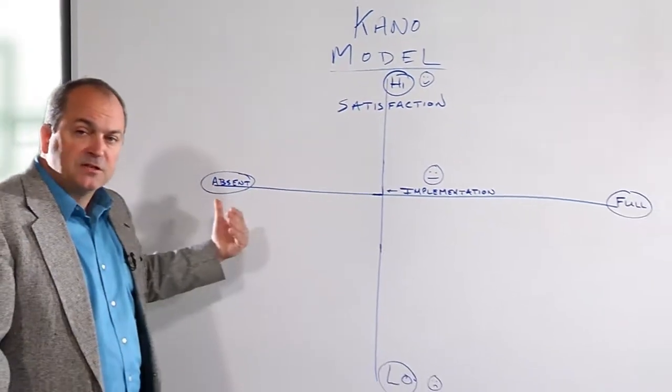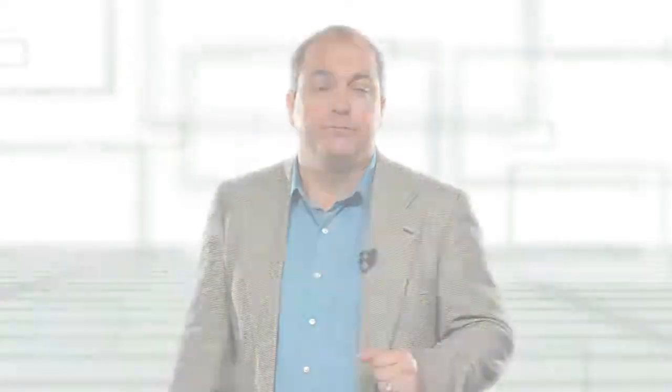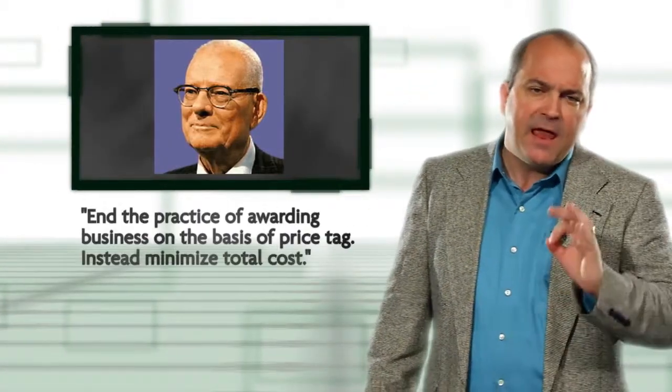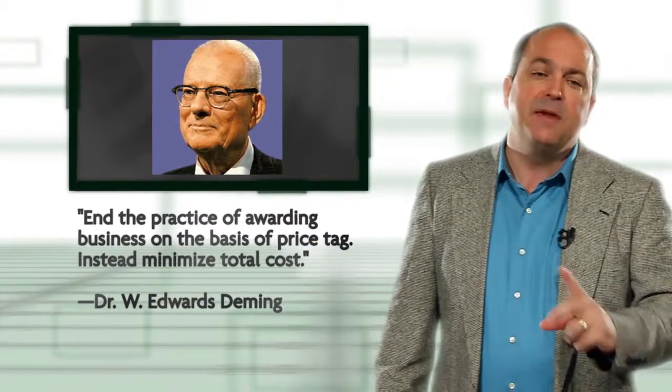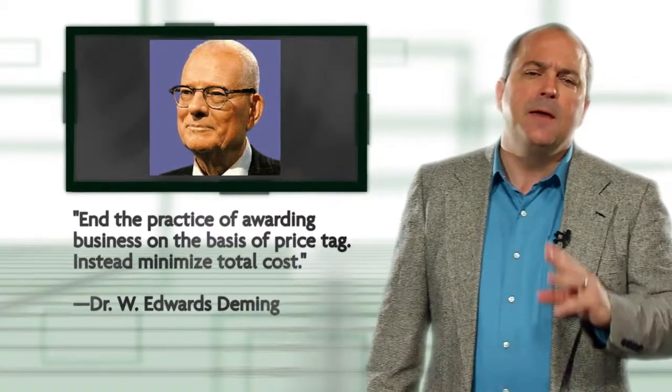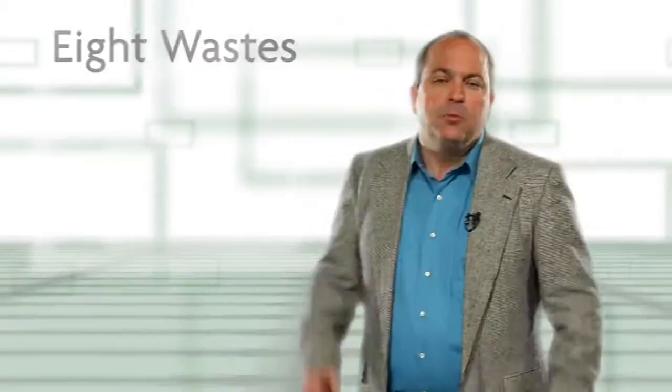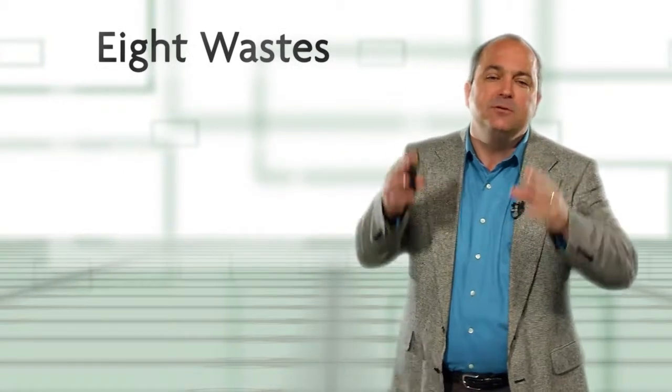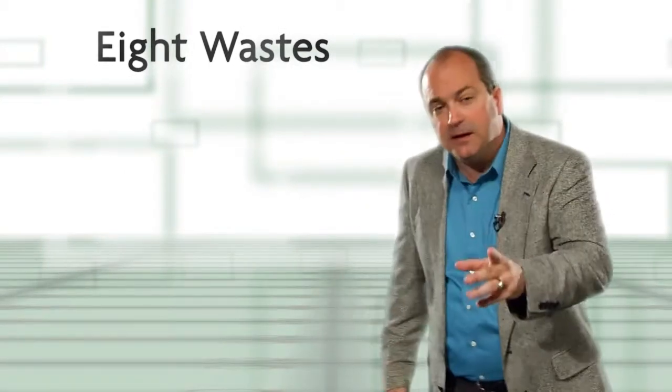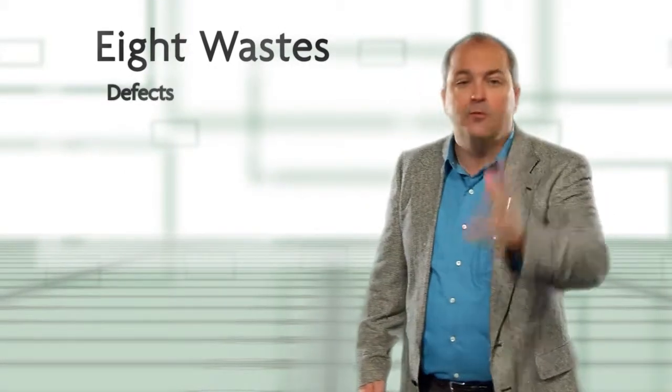Remember what Dr. Deming taught us with his fourth principle. He said, instead of the practice of awarding business on the basis of price tag, minimize total cost. We want to choose criteria that might help to eliminate those wastes including defects, overproduction, waiting, not using employees' minds and skills.